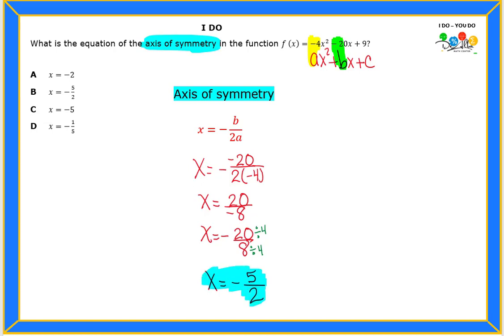And the axis of symmetry, we always have x equals. Because remember, the axis of symmetry is your vertical line that is crossing up and down. So it crosses that x-axis, right? So that's going to be my answer. And that will be letter B for this one.